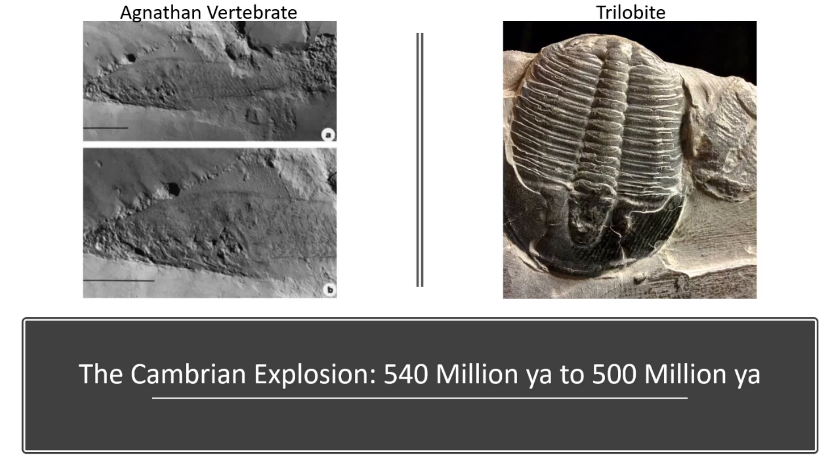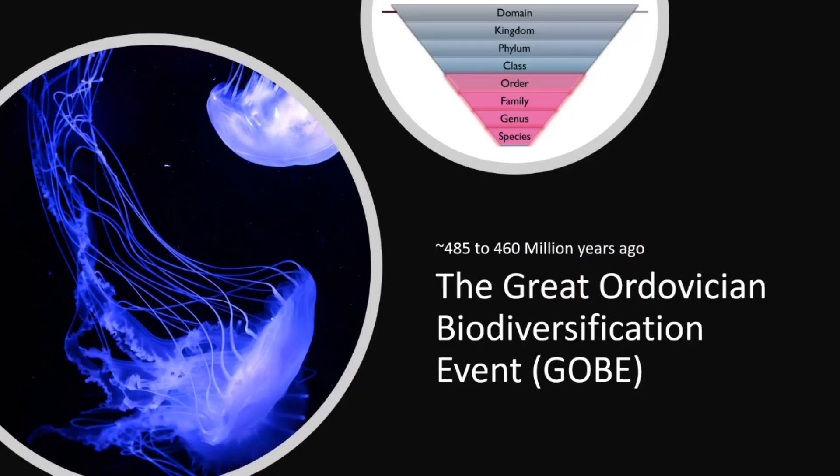Animals such as trilobites became numerous and the first vertebrate evolved. This period lasted from 540 to 500 million years ago. There then followed the Great Ordovician Biodiversification Event. The GOBE is considered the most rapid diversity increase in marine life during Earth's history from 485 to 460 million years ago.